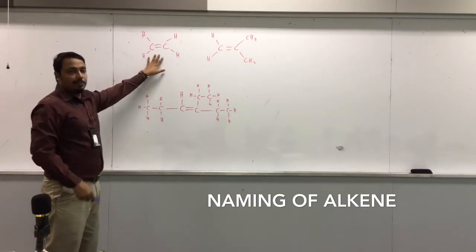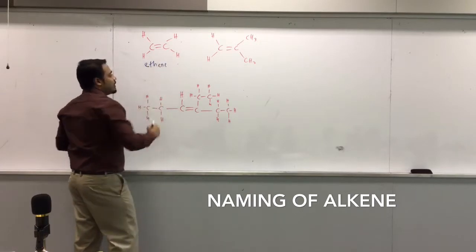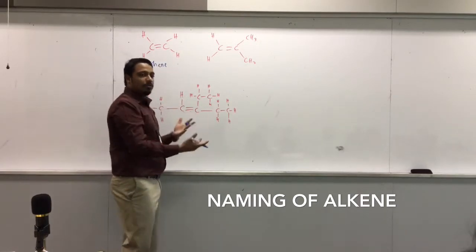The naming of this I think is pretty easy. Everybody knows this. This is ethene. So you can see there's only two carbon and there's hydrogen. How do we name this?